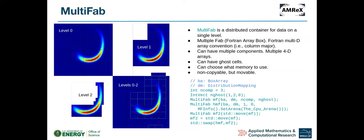MultiFab is one of the most important concepts in AMReX. It's a distributed container for data on a single AMR level. The name comes from 'multiple FAB,' where FAB stands for Fortran Array Box — essentially a multi-dimensional array in Fortran column-major convention. A MultiFab can have multiple components, so if you have three spatial dimensions plus one extra component, that's a four-dimensional array per FAB. MultiFabs can also have ghost cells, which are important for finite volume, finite difference, or particle-in-cell codes.